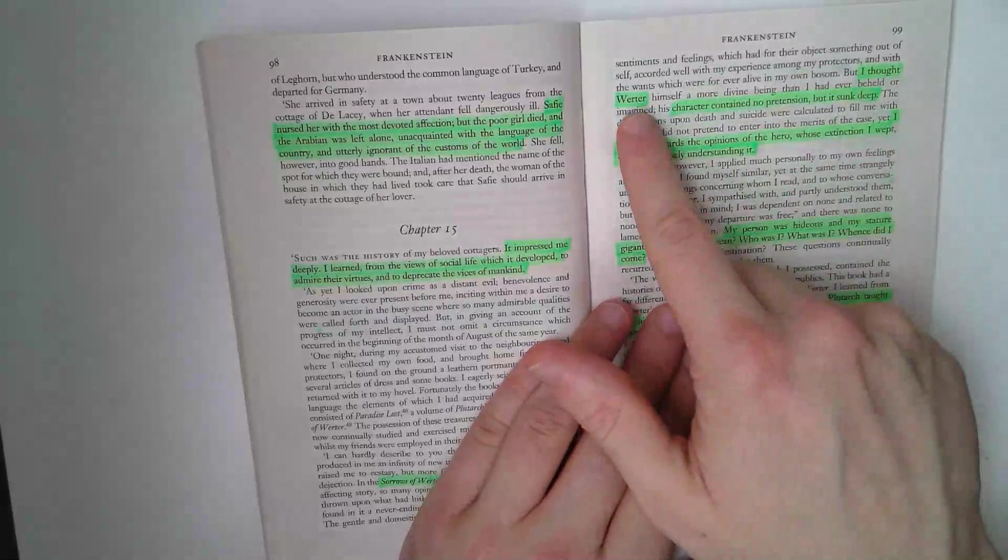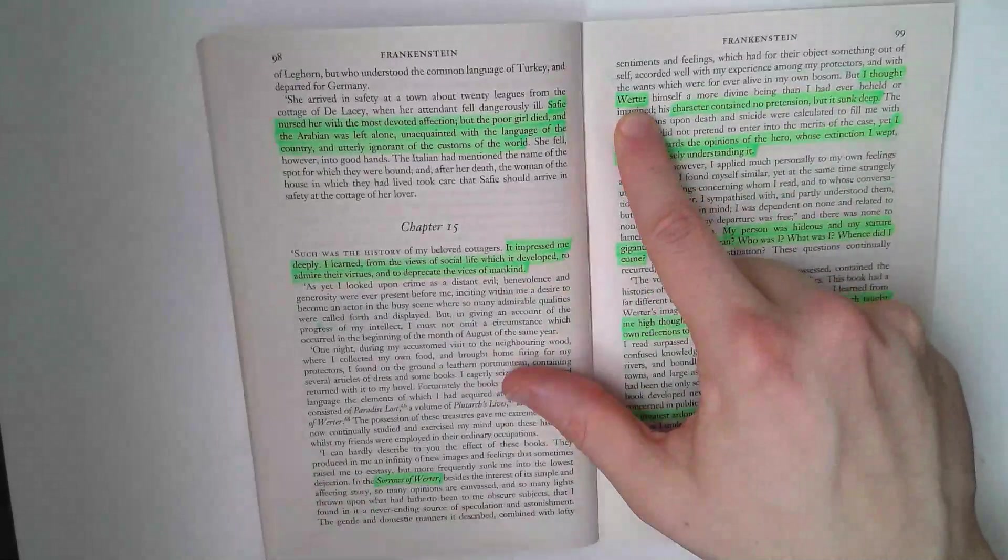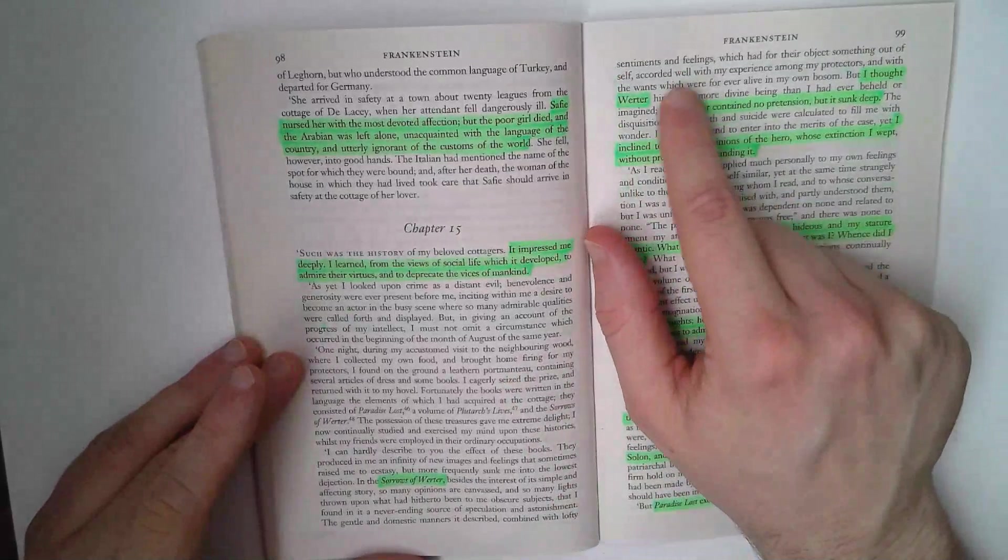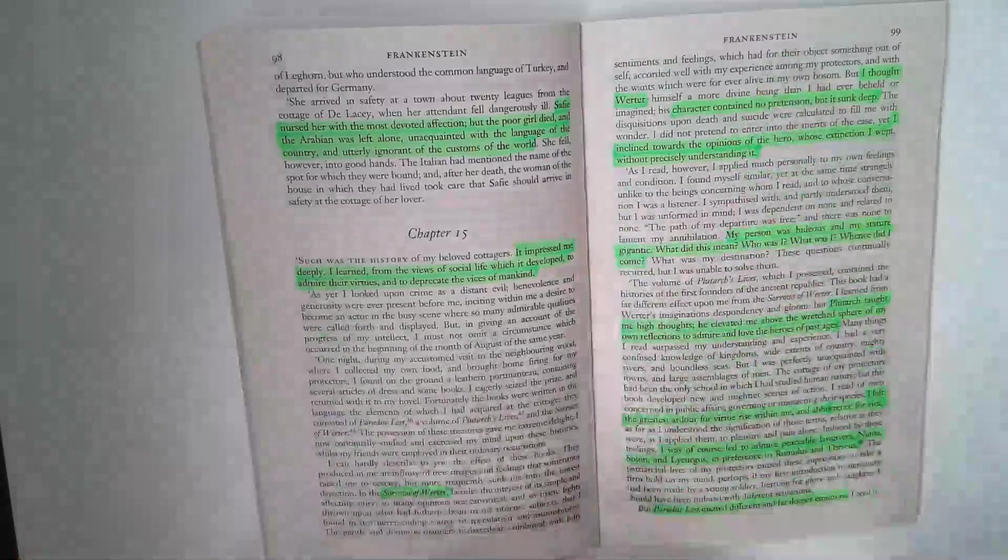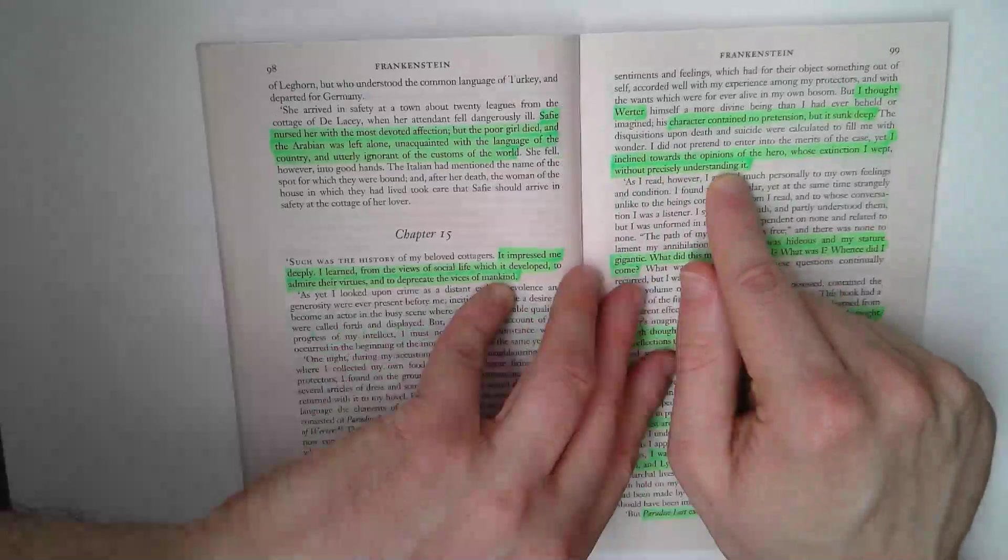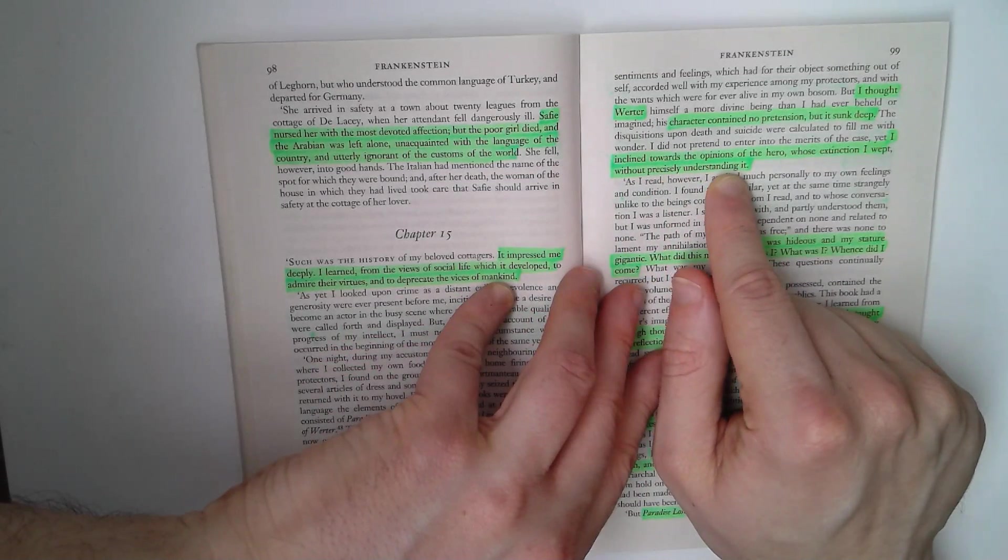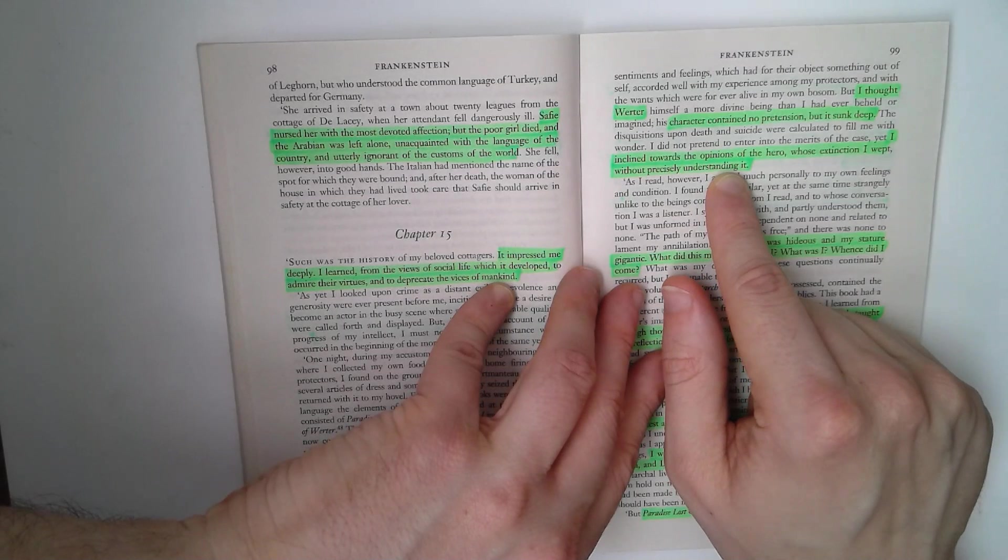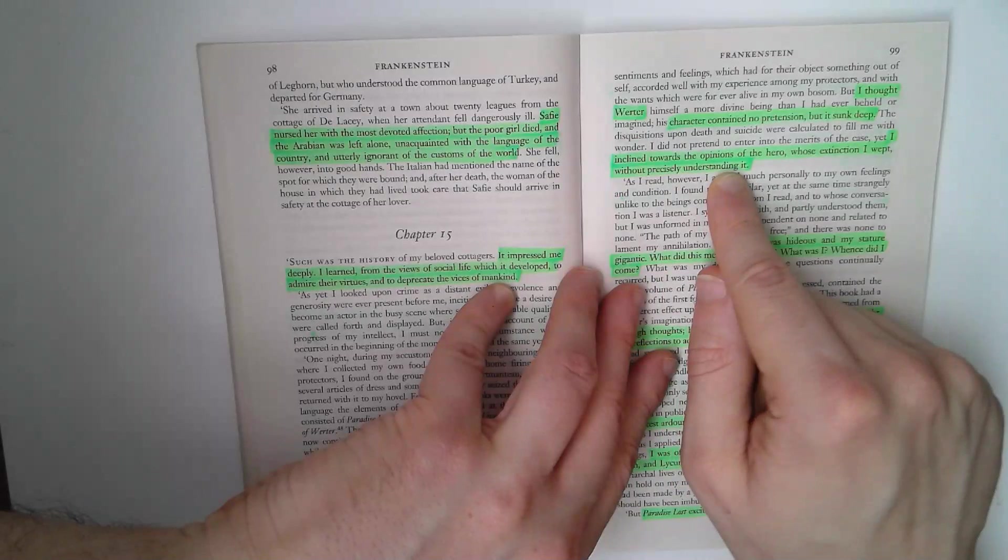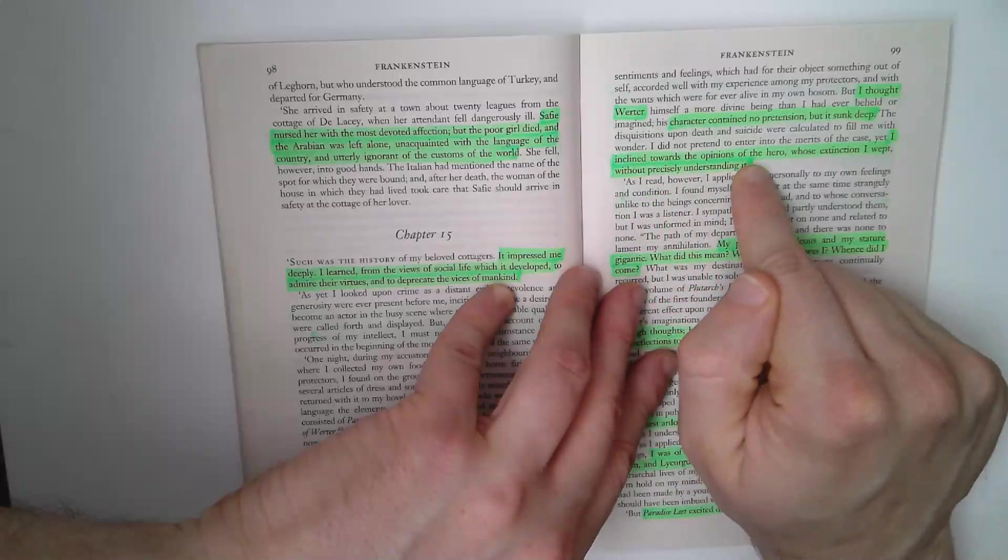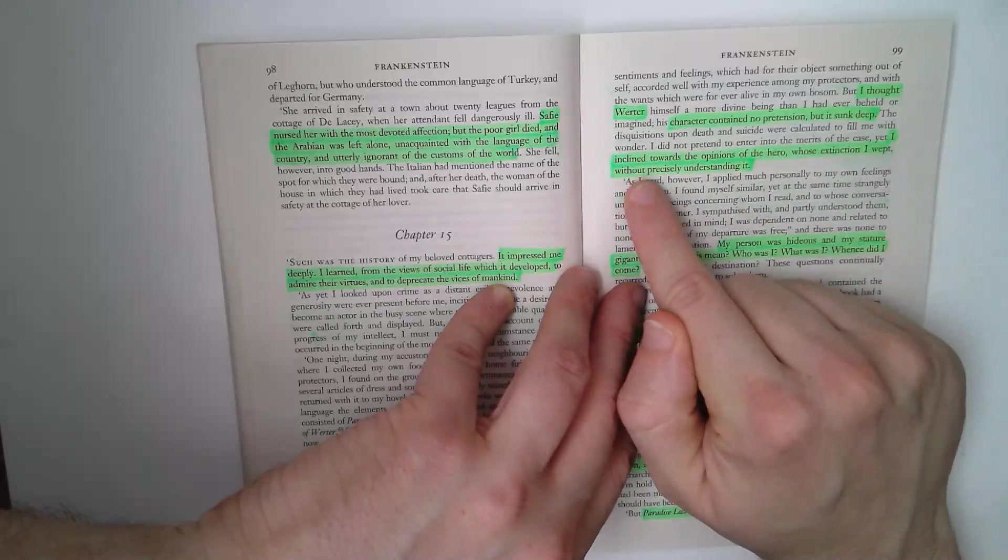He thought Werther himself, and the creature tries to associate himself with Werther. It has lofty sentiments and feelings, accorded well with my experience. So he associates with that, he empathizes with Werther's character, but he doesn't precisely understand it. His character had no pretension, but it sunk deep. I incline towards the opinions of the hero, whose extinction I wept without precisely understanding.